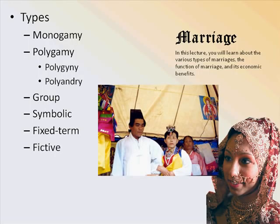Fictive marriages are legal marriages that allow both partners to acquire social benefits with no family being set up. For example, U.S. nationals and immigrants sometimes marry so the immigrant can stay in the country — the so-called green card marriage — which is actually illegal but does happen. There's also the levirate, where the kin of a man who has passed away provides a new husband for the widow, often one of the deceased man's brothers, which helps keep children in the family.